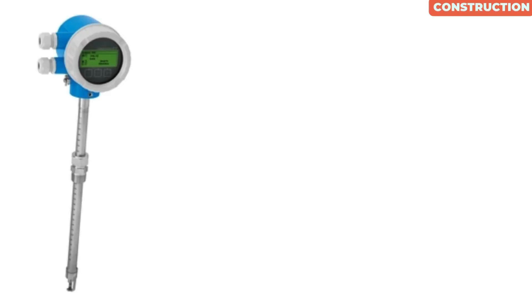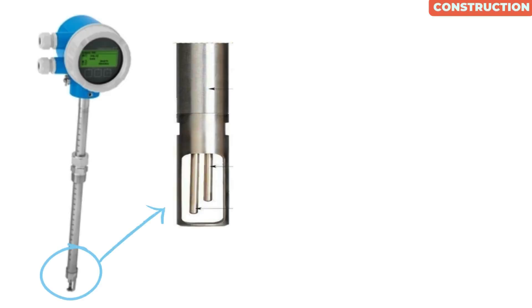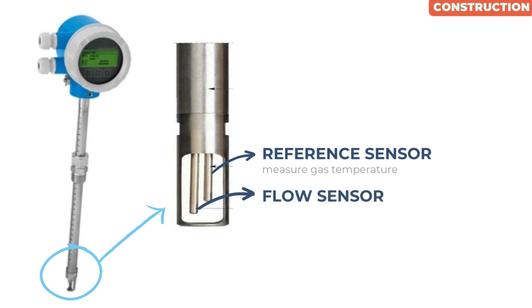Construction of thermal mass flow meter: Toward the tip of the meter's probe there are two sensors available. First, a reference sensor which is used to measure the gas temperature. Secondly, a flow sensor, also known as heated probe, which is self-heated by an integrated circuit.